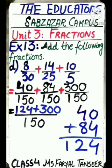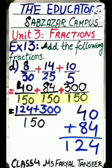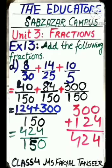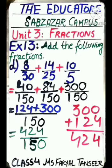8/30 converted to 40/150. 14/25 converted to 84/150. And 10/5 converted to 300/150. Now all three denominators are the same — 150 — so we can add them. 40 + 84 = 124; then 124 + 300 = 424. So the answer is 424/150.